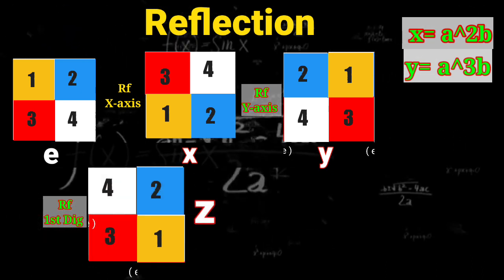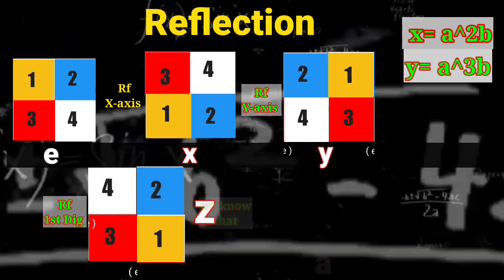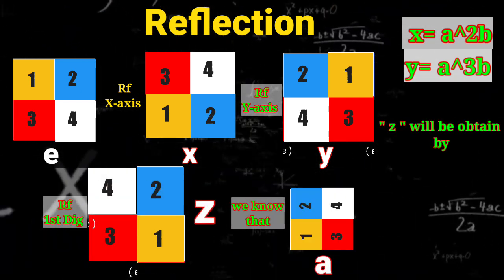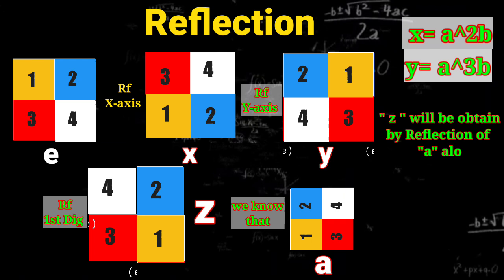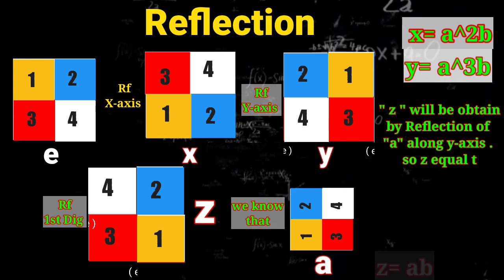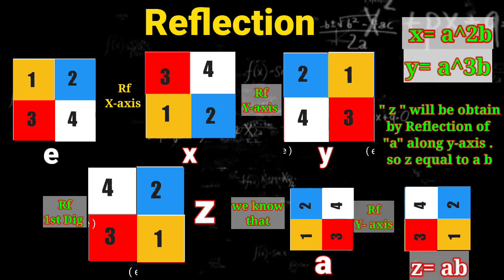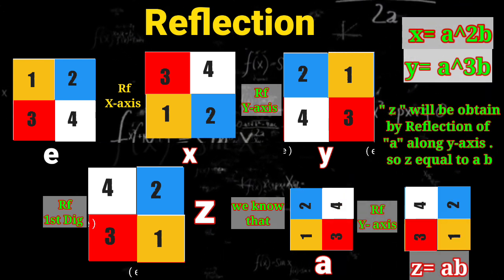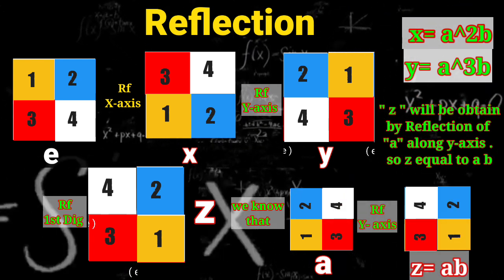Reflection along the main diagonal: Z will be obtained by reflection along the y-axis. So z equals B.